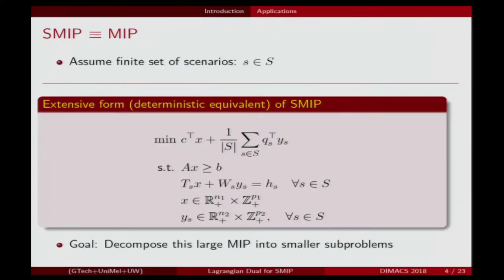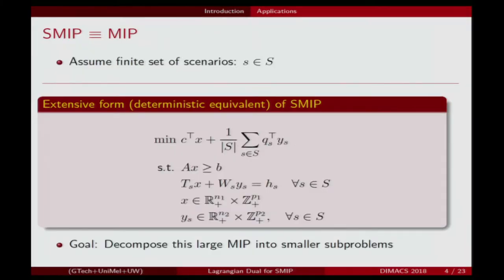The first thing I want to do is describe the framework. I'm going to assume we have a finite number of scenarios of our uncertainty, indexed by the set capital S. Once we do that, we can formulate this as a very large-scale deterministic mixed integer program — always known as the deterministic equivalent form. We just introduce a vector of variables y_s for every different scenario, with constraints for every scenario satisfying what you're allowed to do in the recourse. We minimize our first-stage cost plus the average of all second-stage costs. But this is too large to just give to standard solvers.